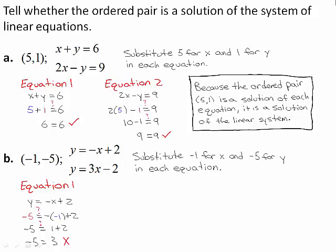Because negative 5 equals 3 is not a true statement, the ordered pair negative 1, negative 5 is not a solution of equation 1. Next, write equation 2: y equals 3x minus 2. Substitute negative 1 for x and negative 5 for y.